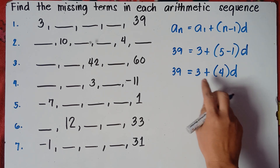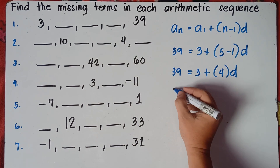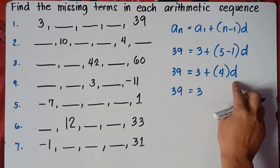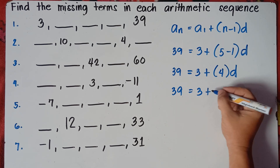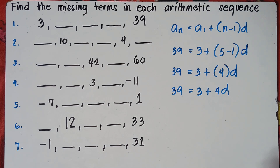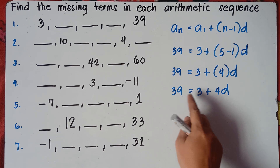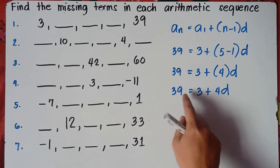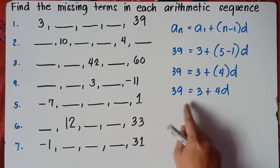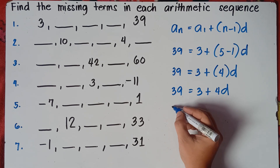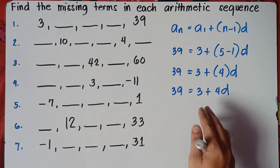Follow PEMDAS — multiplication comes first before addition. So this will be 39 equals 3 plus 4 times d, which is 4d, so 39 equals 3 plus 4d. To get the value of d, you need to isolate d. You can use the addition property of equality — add both sides by negative 3, or subtract both sides by 3. So 39 minus 3 gives 36 equals 4d.